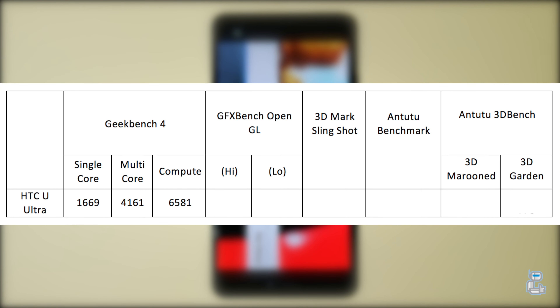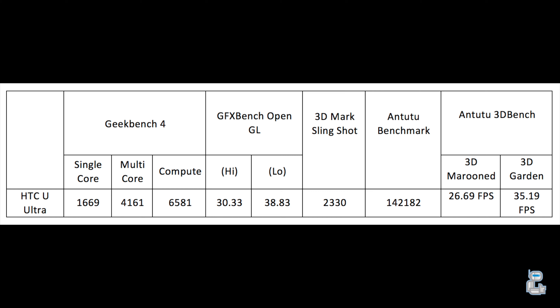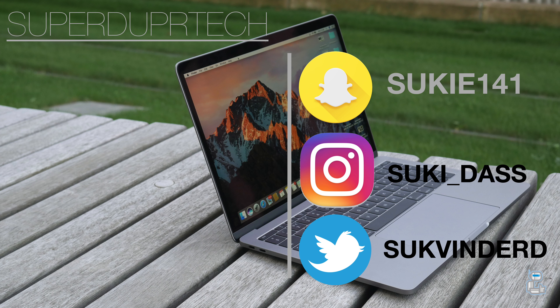Finally, the last benchmarking application that I did run was once again from Antutu, this time their 3D benchmarking tool. As the results in the table show, for the 3D Marooned test I did get an FPS readout of around 26.69, whereas for 3D Garden I did get an FPS readout of 35.19.